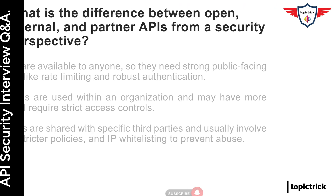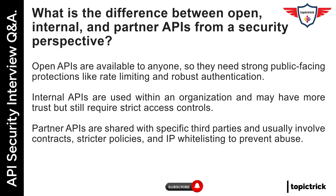What is the difference between open, internal, and partner APIs from a security perspective? Open APIs are available to anyone, so they need strong public-facing protections like rate limiting and robust authentication. Internal APIs are used within an organization and may have more trust, but still require strict access controls. Partner APIs are shared with specific third parties and usually involve contracts, stricter policies, and IP whitelisting to prevent abuse.